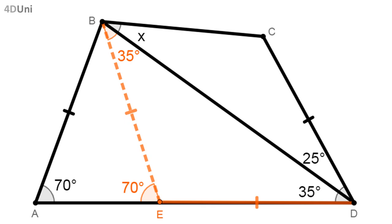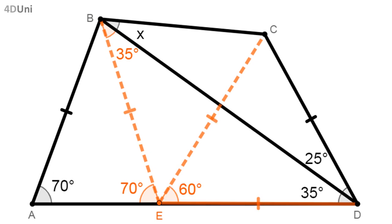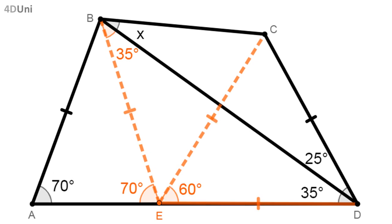Now that we have completed the steps of the recommendation, we inspect if we can calculate x. We see that we cannot calculate x directly because we don't know the measure of the angle at C. But we have obtained segment ED which has equal length as CD. They both have the common end D and form a 60 degree angle, because 35 degrees plus 25 degrees equals 60 degrees. Remembering the recommendation for that case, it is convenient to draw segment EC because we would obtain an equilateral triangle. Then EC is equal to ED and CD, and the angle CED is equal to 60 degrees.